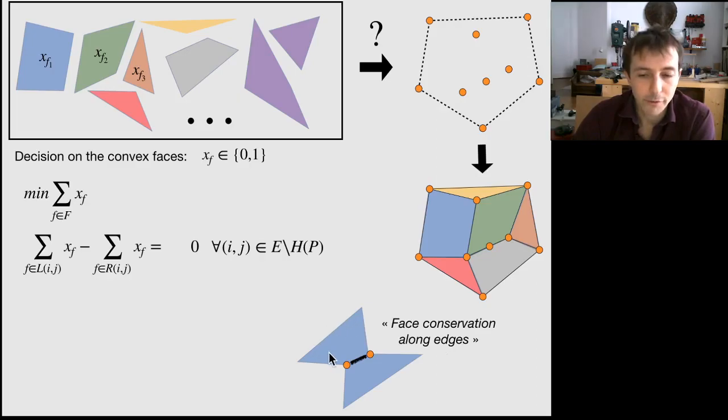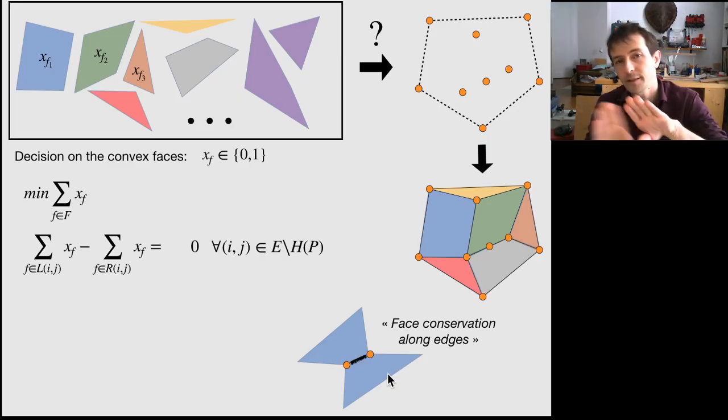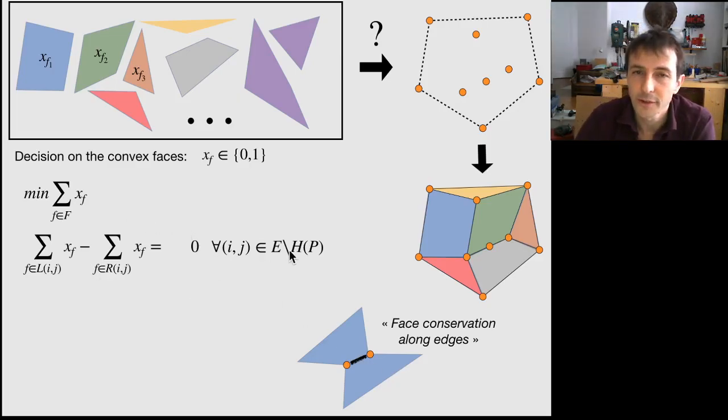So when you have a face on the left side of an edge, you must match it with a face on the other side, on the right side. When you look at the statement of the constraint for any edge ij,